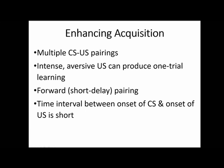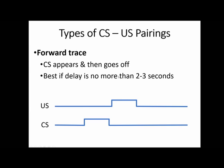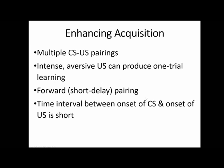Other things that enhance acquisition: as we discussed, forward pairings work best, with forward short delay being optimal, though forward trace isn't bad either. Having stimuli close in time gives the best chance of acquiring an association. Specifically, having a shorter time interval between the onset of the conditioned stimulus and the unconditioned stimulus makes it easier to form that association.